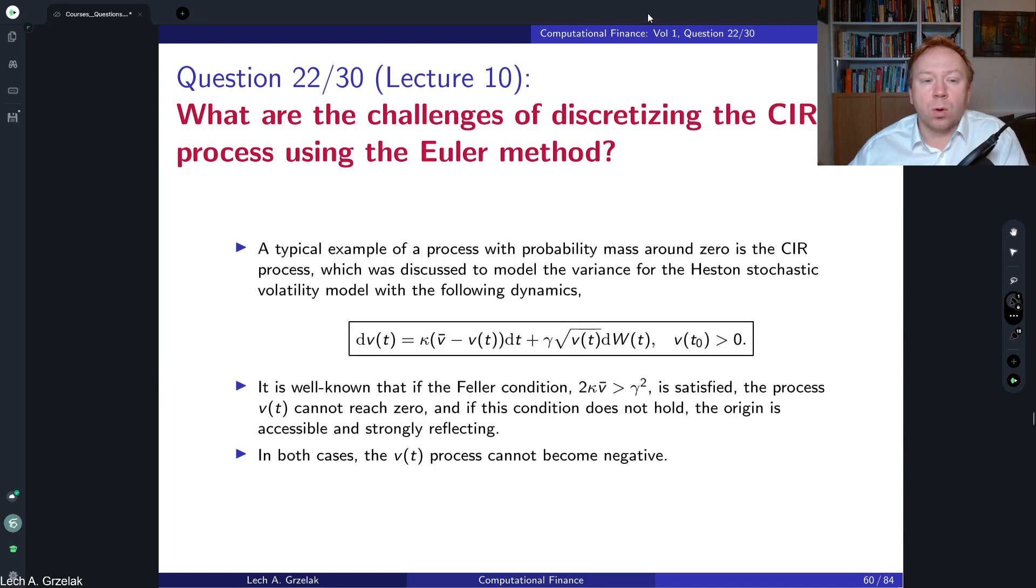The question is as follows: What are the challenges of discretizing the CIR, the Cox-Ingersoll-Ross process, using the Euler method?